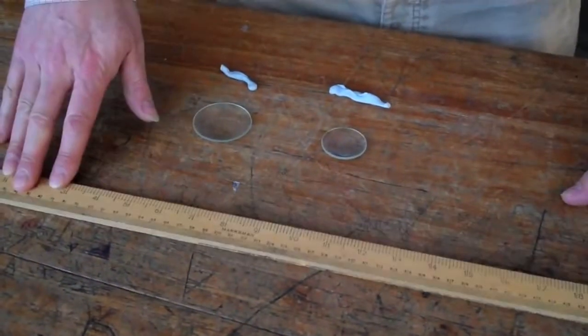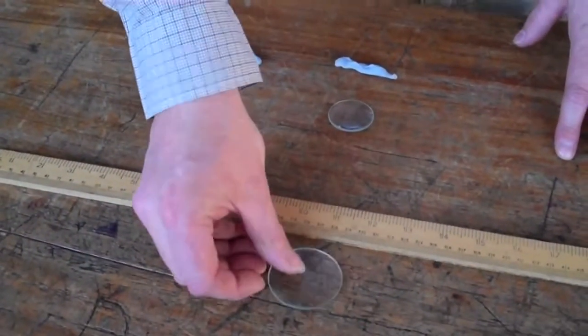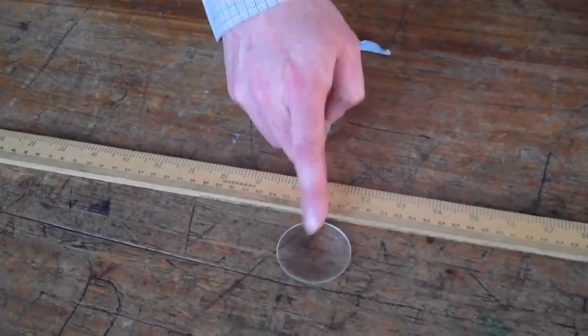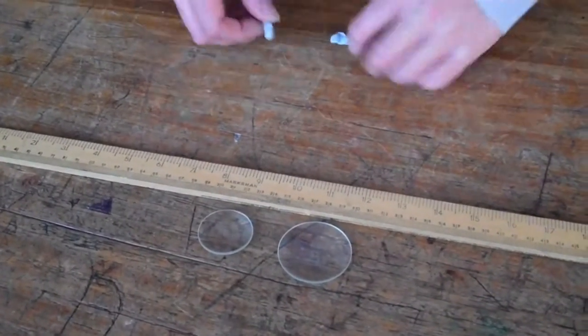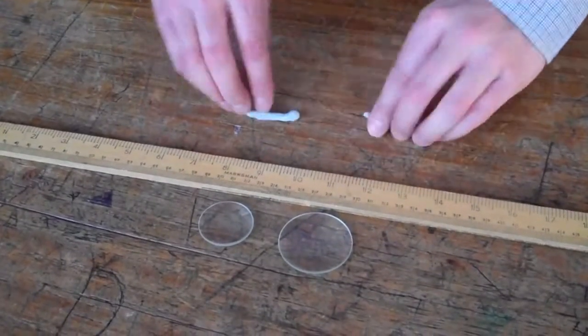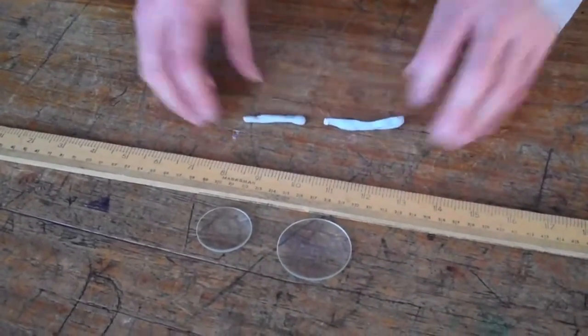Okay, we've got a ruler that's going to help us. We've got our big lens, and if you remember that had a focal length of 20. We've got our small lens which has a focal length of 10, but I've got two little bits of blue tack, which I'm just going to roll a little bit like that, and you'll see why.